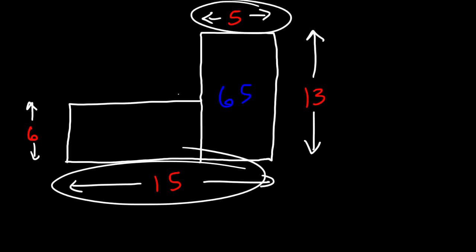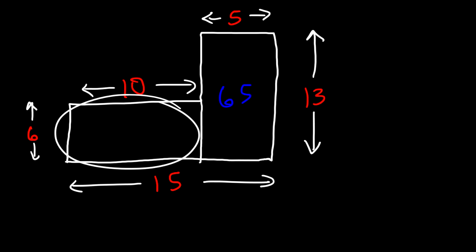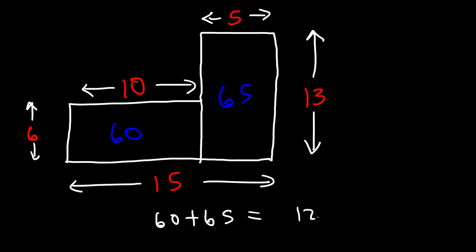This side is 15 and this side is 5, so the remaining side must be the difference: 15 minus 5 is 10. So this rectangle has a length of 10 and a width of 6 — 10 times 6 is 60. The total area of the composite figure is 60 plus 65, which is 125 square units.